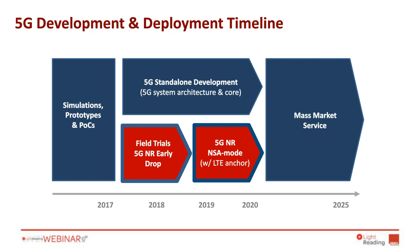An important thing to be aware of is there are kind of two development tracks. The first is non-standalone 5G — putting a 5G new radio on top of essentially an LTE network, where the LTE provides signaling, control, and the 4G core. This will be a lot faster and simpler, and a number of operators are committed to this path, though it's more limited in terms of the number of services you can provide.